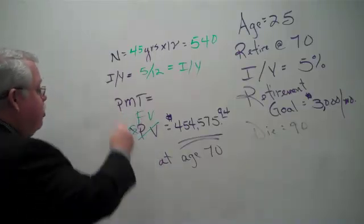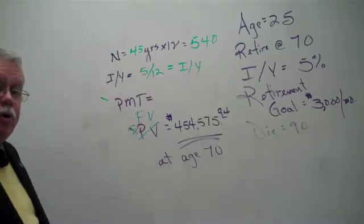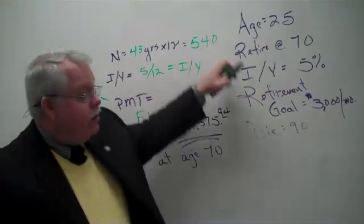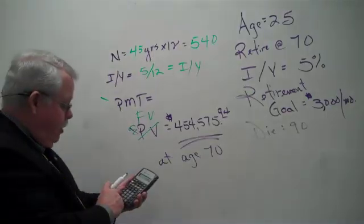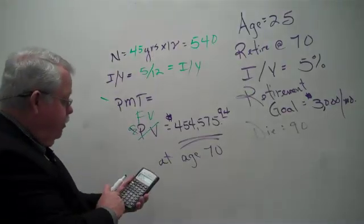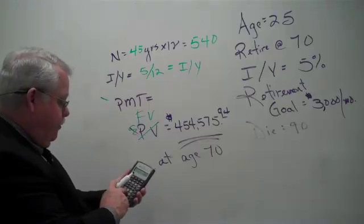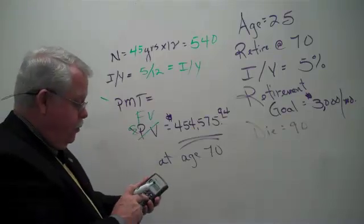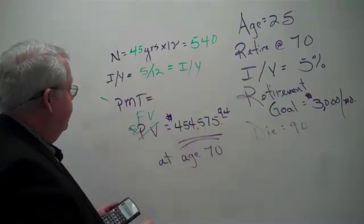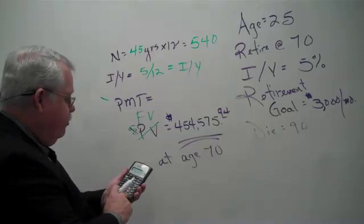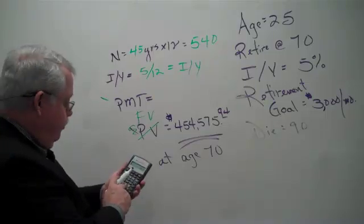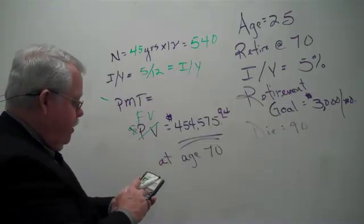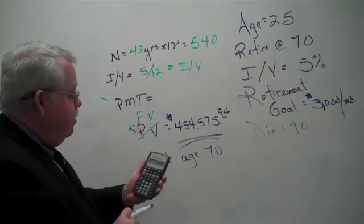How much per month, that's what we're going to calculate now, how much per month does he need to contribute to his retirement plan to make this happen given these assumptions? Okay? So, let's see what we've got here. Clear the registers. I've got a 454,575,94 for what? That's my future value. That's what he's building towards. We've got 5 divided by 12 is still his interest rate. And he's got 540 ends or payment periods. To accumulate that money, how much does he need to pay every month?